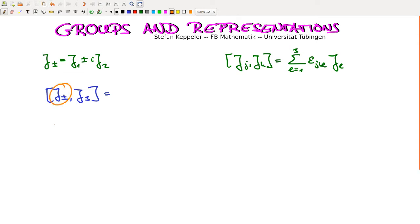And now we study the commutation relations of J plus minus with J3. So that's J1 plus minus i J2, commutator J3. And here we have the commutation relations. So commutator of J1 with J3, that's minus i J2.